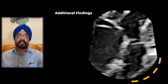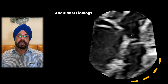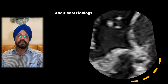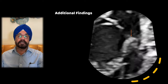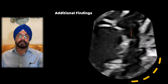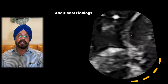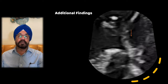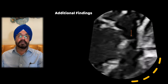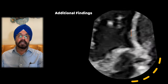Another additional finding in this patient is a sub-aortic membrane — as I showed in a previous YouTube video. This sub-aortic membrane can produce obstruction across the LV outflow tract and is visible just proximal to the aortic valve.